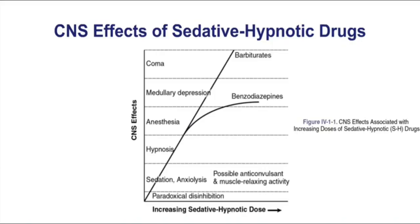If you start at the very bottom of the diagram, you can see that at low doses benzos and barbs are going to have a sedative effect, an anti-anxiety effect, anti-convulsant effects, and even muscle relaxant activities at lower doses. If I increase the dose of those drugs, I can get a hypnotic effect. These drugs can certainly be used to help your patient sleep more effectively.